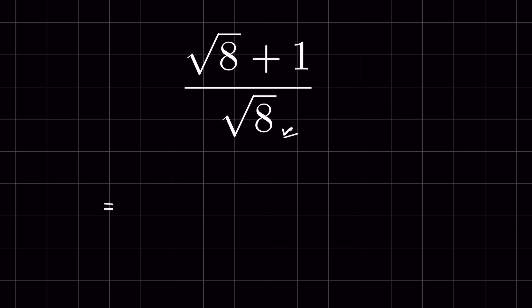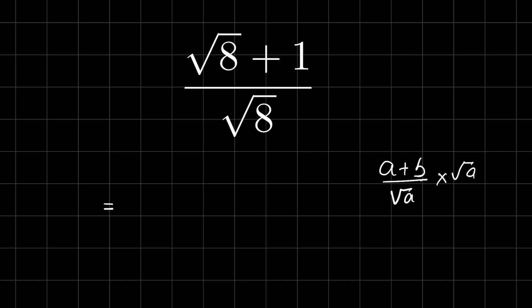Whenever there is a radical in the denominator, we rationalize the denominator. To rationalize the denominator, we multiply and divide by the denominator. For example, if we have (a + b) upon square root of a and we multiply it with square root of a and divide it by square root of a, then we can cancel these terms and the fraction won't change.